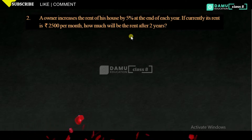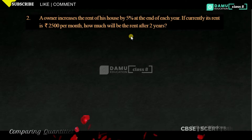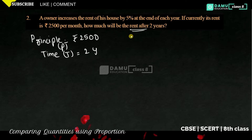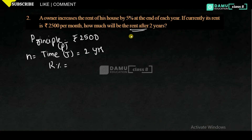In this module we are going to discuss the second question. An owner increases the rent of his house by 5 percentage at the end of each year. If currently the rent is 2500 rupees per month, how much will be the rent after two years? So the principal is 2500 rupees per month. Time will be two years. Rate of interest is 5 percentage.